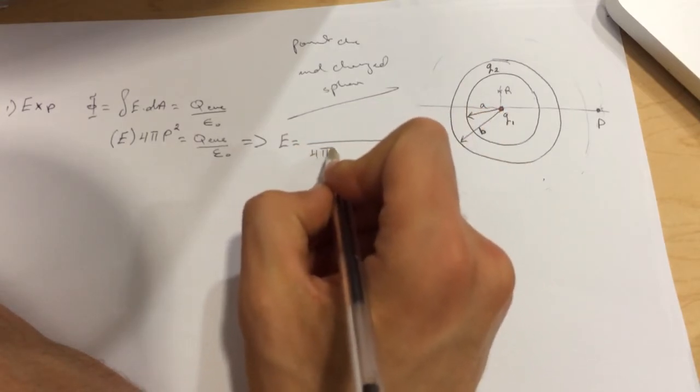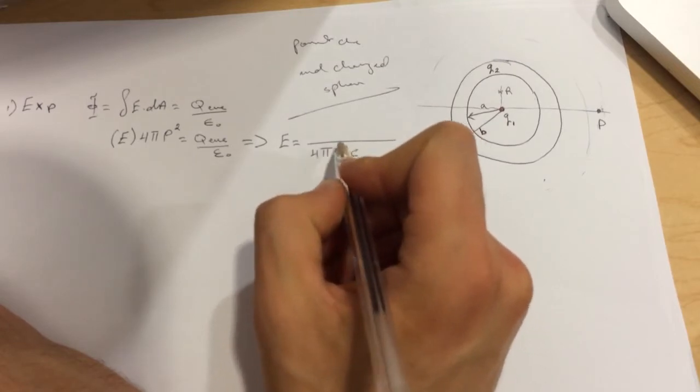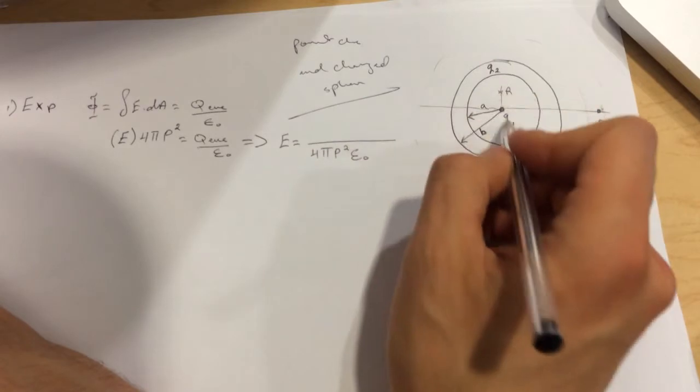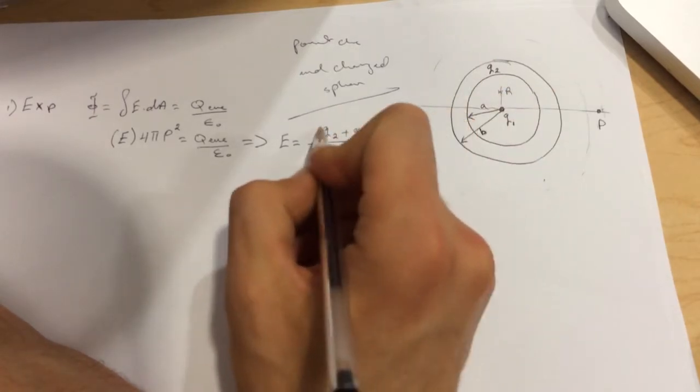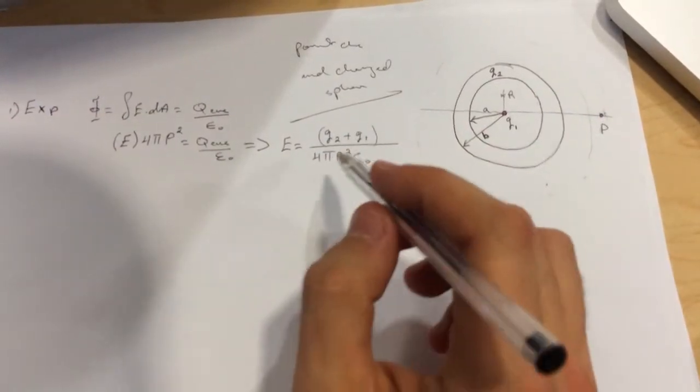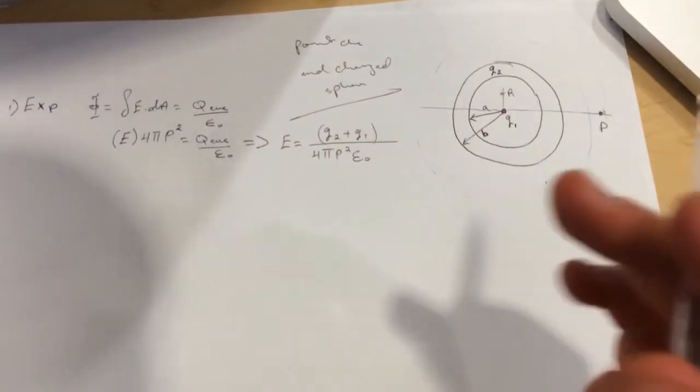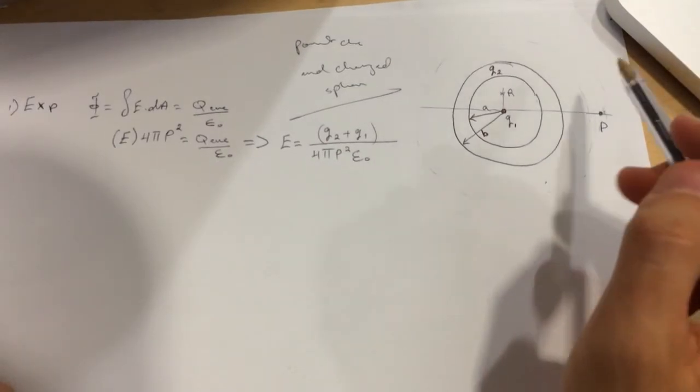E equals (Q2 plus Q1) divided by 4πP² epsilon naught. Just add the charges Q2 plus Q1. If one is negative or positive, make sure you put the sign because it's the sum of them.